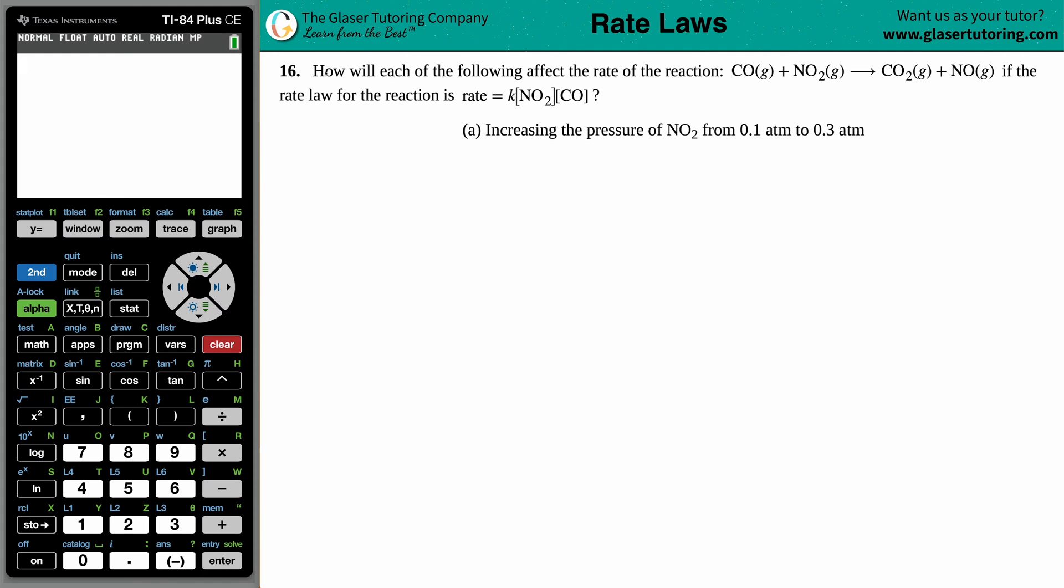Number 16: How will each of the following affect the rate of the reaction? We have our balanced equation: CO gas plus NO₂ gas yields CO₂ gas plus NO gas. The rate law for this specific reaction is rate equals k times the concentration of NO₂ times the concentration of CO.